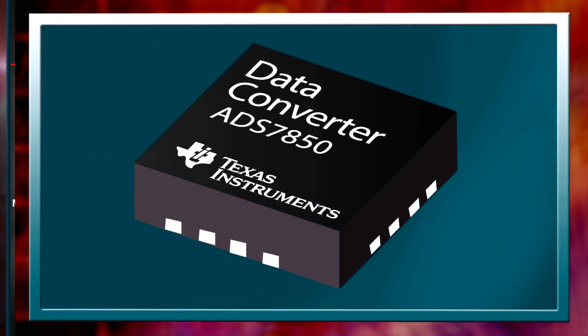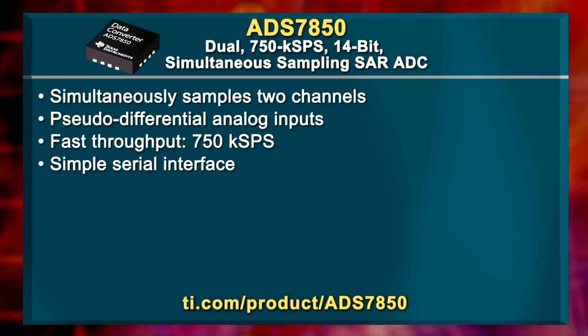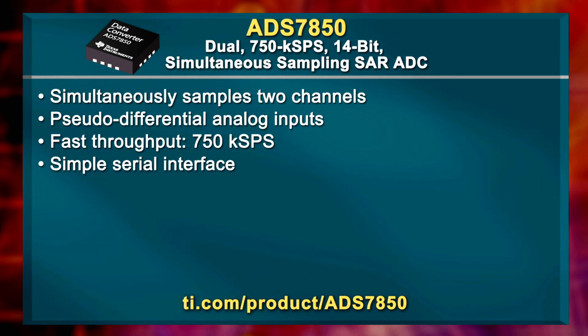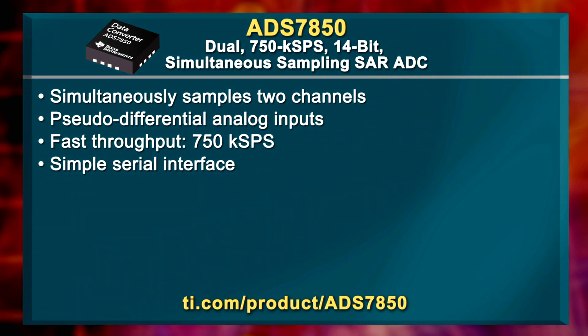In your next design for protection relays, programmable logic controllers, industrial automation and more, check out the ADS7850. It's a dual, 750-kilosample per second, 14-bit simultaneous sampling SAR ADC. This device includes features specifically for motor control applications, such as a convert abort feature to enable faster response time of the overall system.